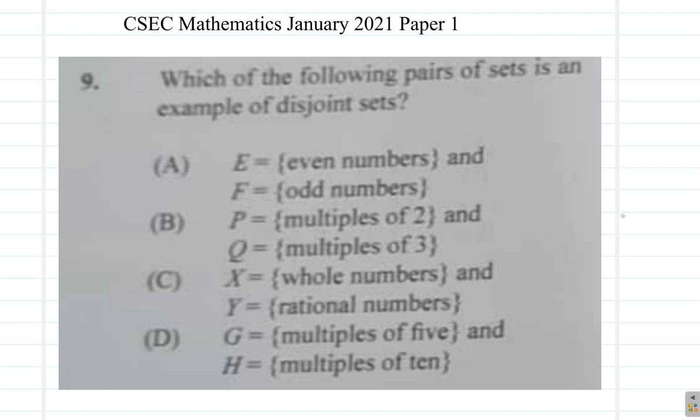2 could be, say, 24. That's a multiple of 2. Is it also a multiple of 3? 3 times 8 gives 24, so it's also a multiple of 3. So these are joint sets, so this one is out.